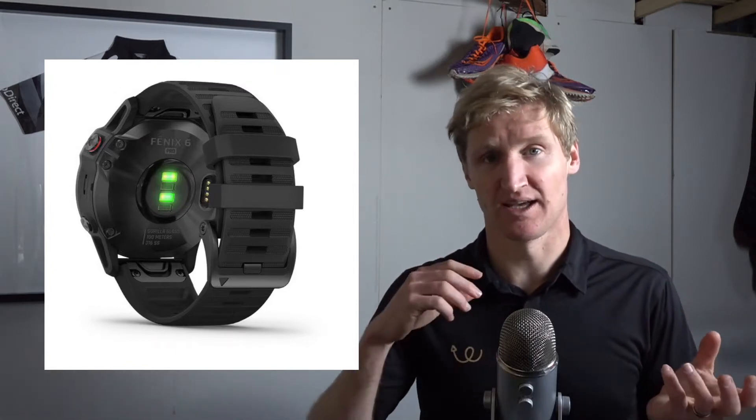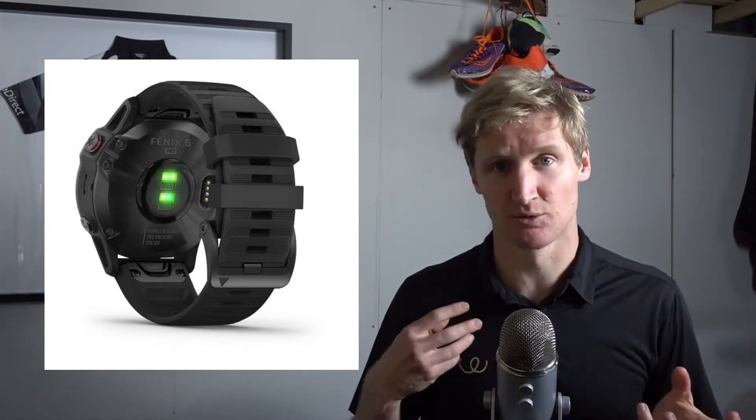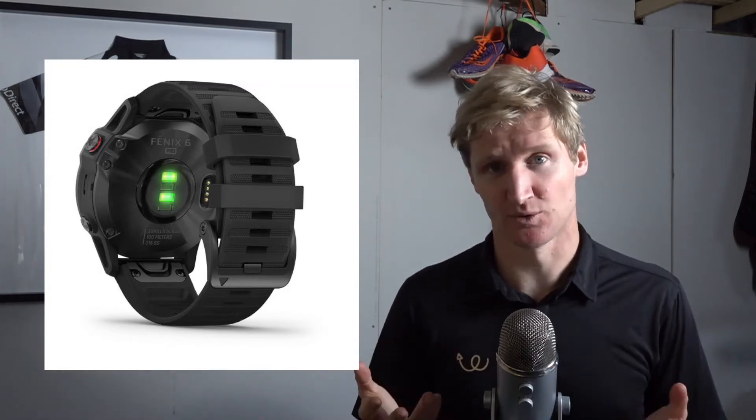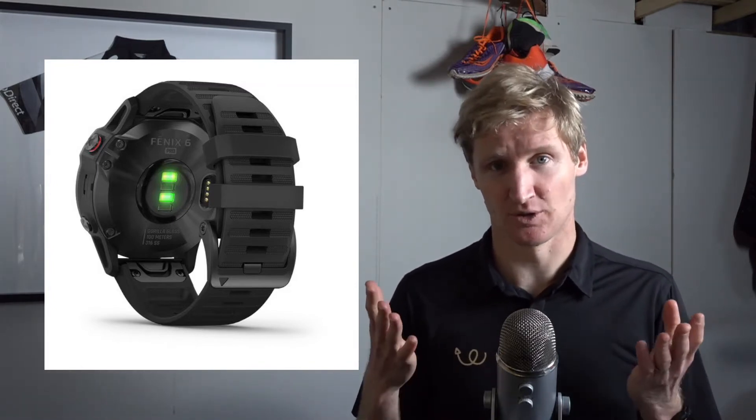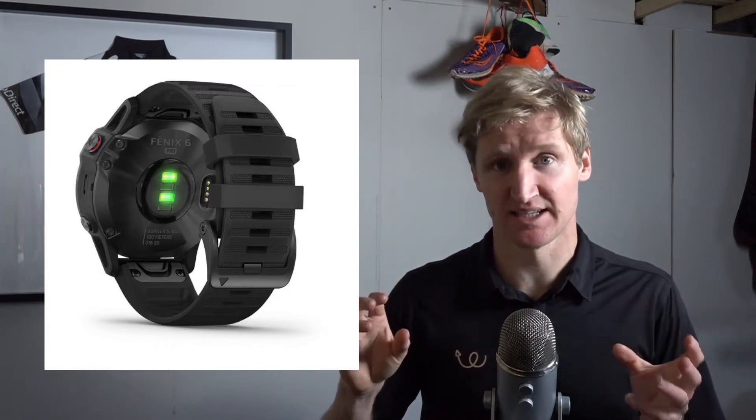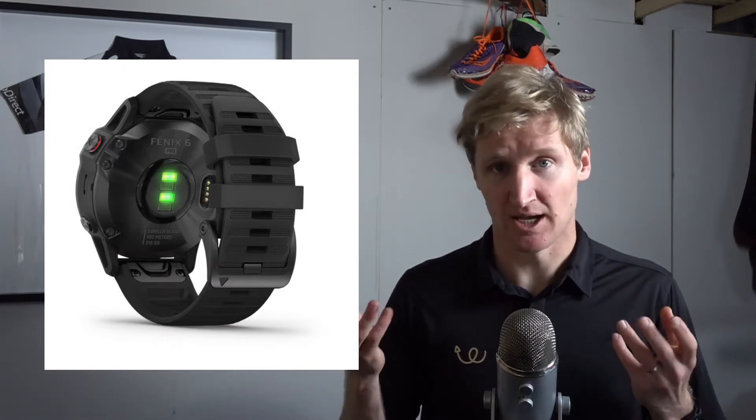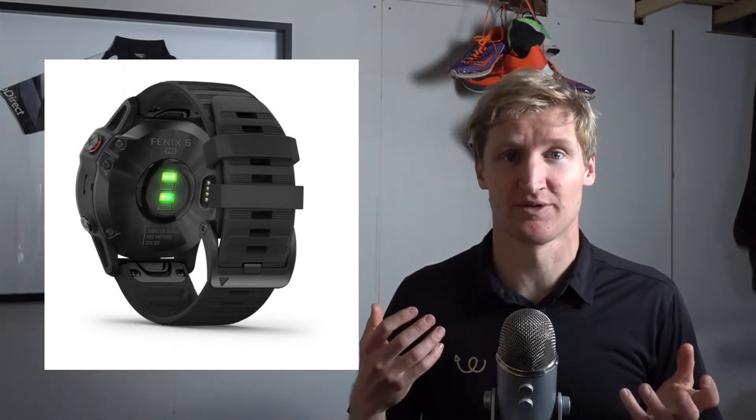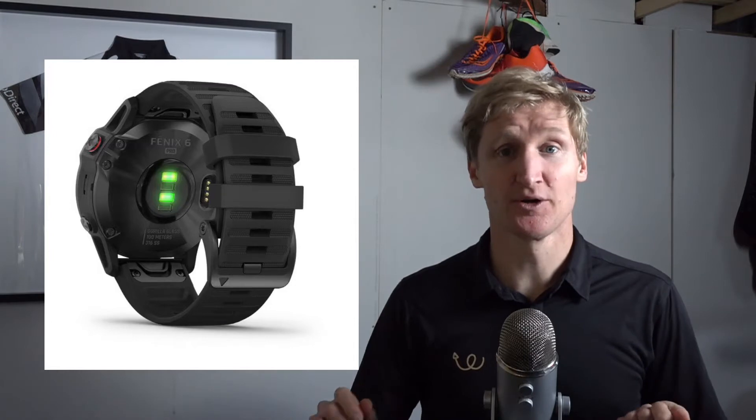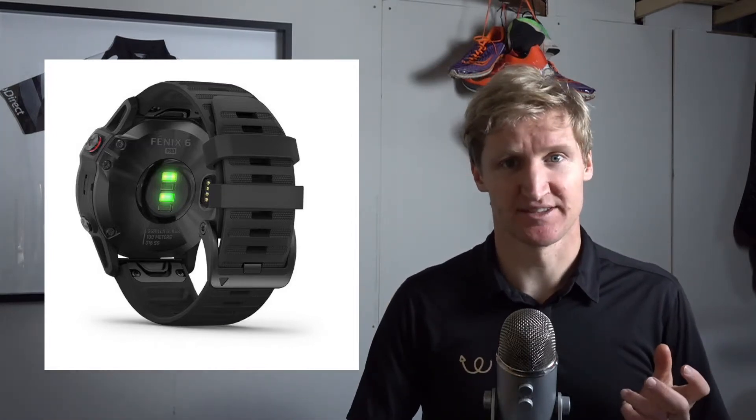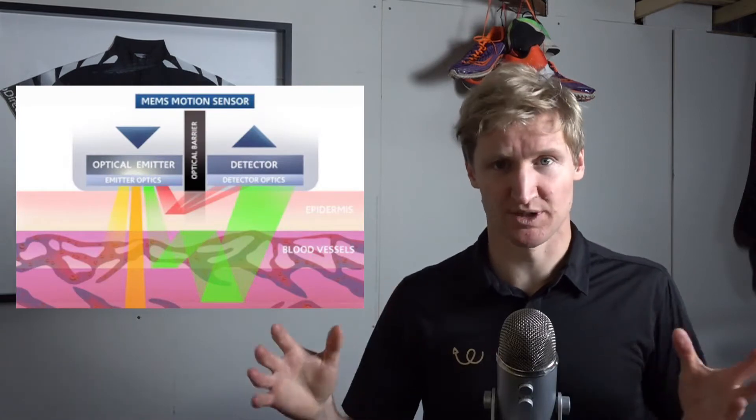It's called photoplethysmography, is the way that these watches are trying to measure your heart rate through the amount of light absorbed. These LEDs are emitting light and then your tissue is absorbing some of it and reflecting some of it back into these photo detectors.